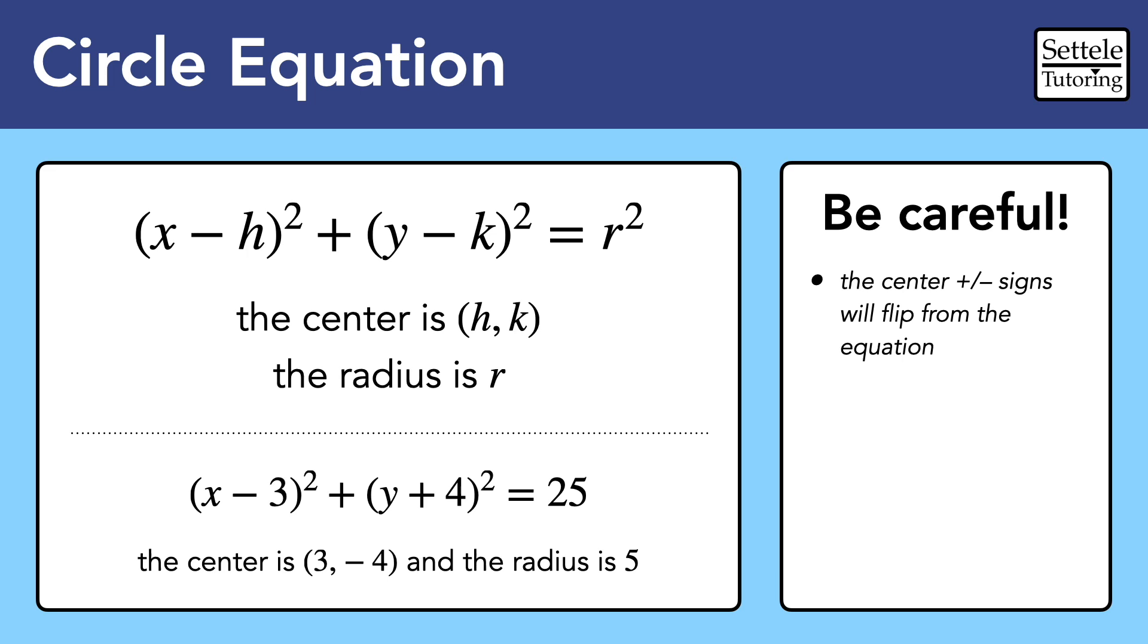In this case, the x-3 told us that the x-coordinate is actually positive 3, and the y+4 told us that the y-coordinate is negative 4. This is similar to how we read the root and vertex forms of quadratic equations.